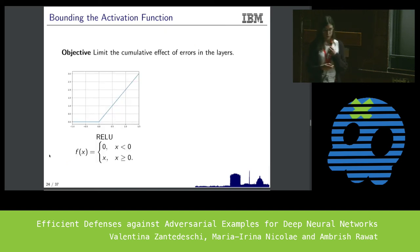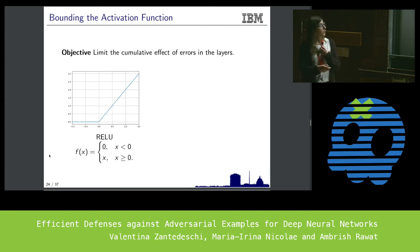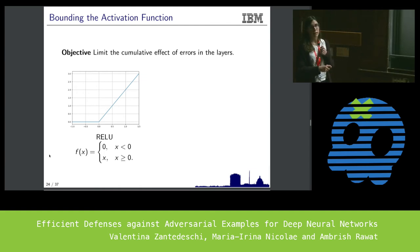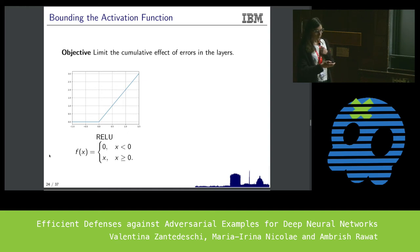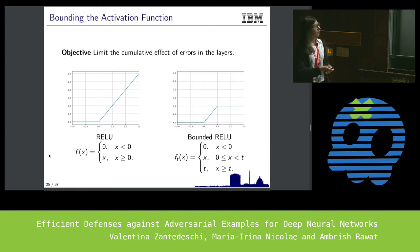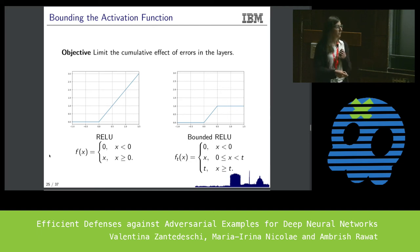The second contribution consists in controlling the cumulative perturbation effect in neural networks. Classically, the activation function at each neuron returns zero if the input value is negative, and the same value if it is positive. To control the amount of perturbation accumulated through the network, we simply bound the maximum value that a neuron can return — for instance, by a constant T.